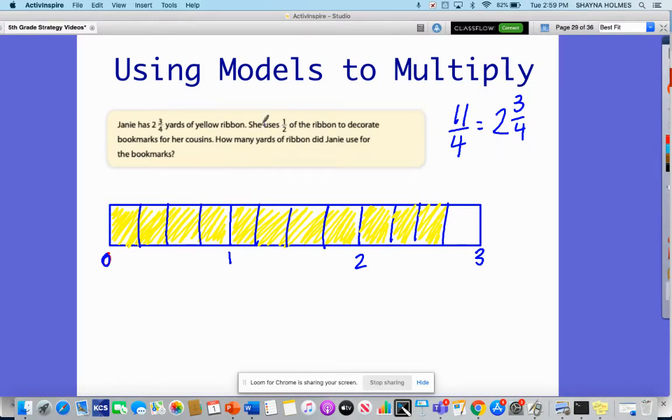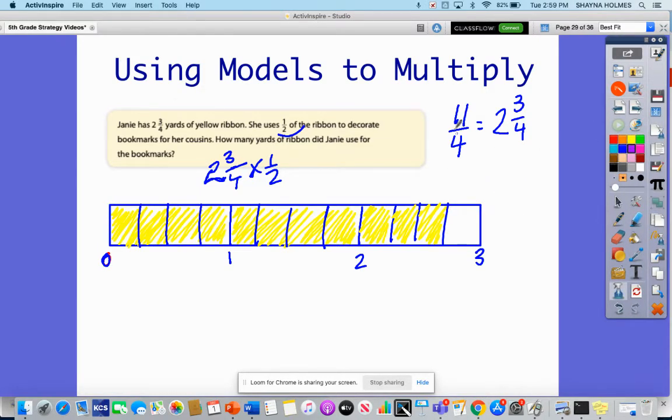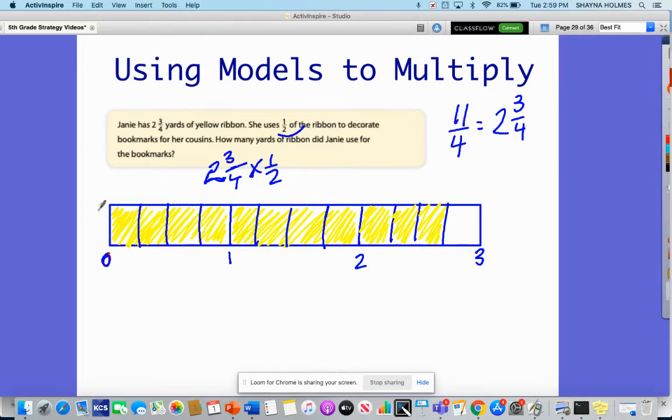She uses ½ of the ribbon. So do not get this confused with a subtraction problem. I'm finding the value of ½ of the ribbon, 2¾ times ½. This is going to be difficult to find half because I have eleven, I can't break eleven in half. So I'm going to break each of these sections in half. This strategy will work with any two fractions that you're multiplying.